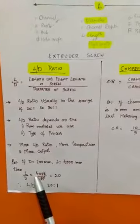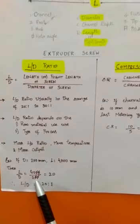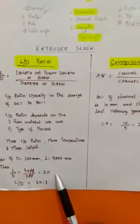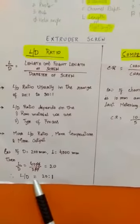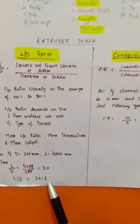L by D is equal to 4000 by 200, that is equal to 20. Therefore L by D ratio is equal to 20:1.